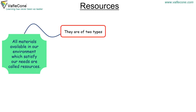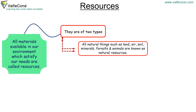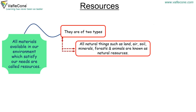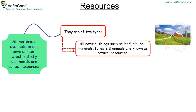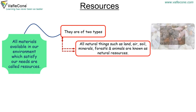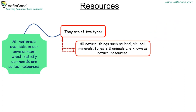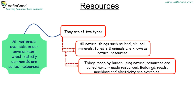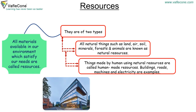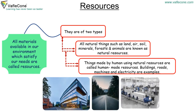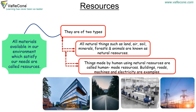They are of two types. All natural things such as land, air, soil, minerals, forest and animals are known as natural resources. Things made by humans using natural resources are called human-made resources. Buildings, roads, machines and electricity are examples.